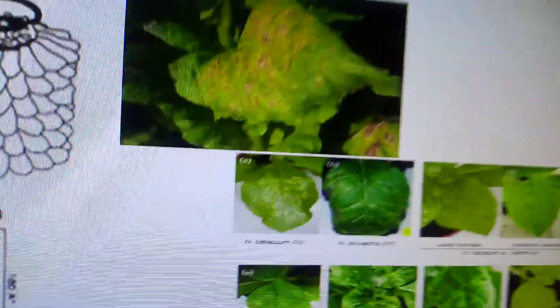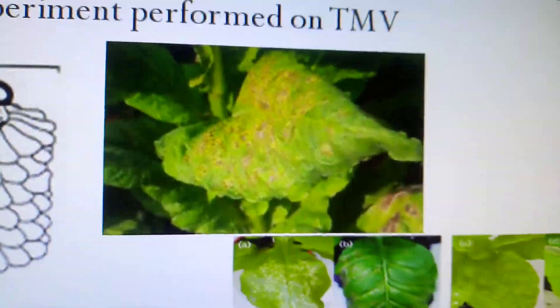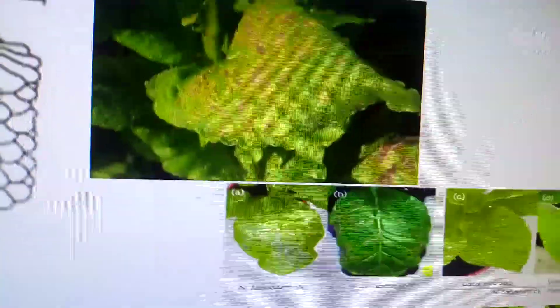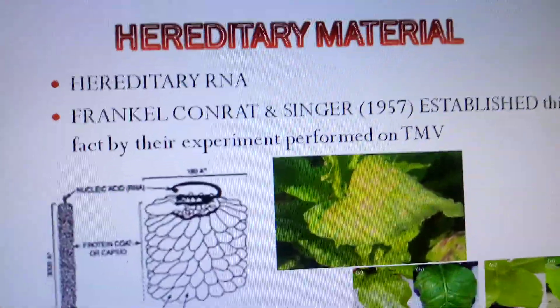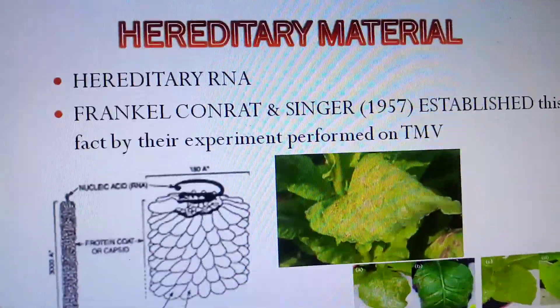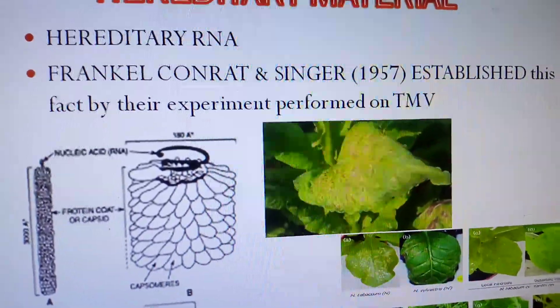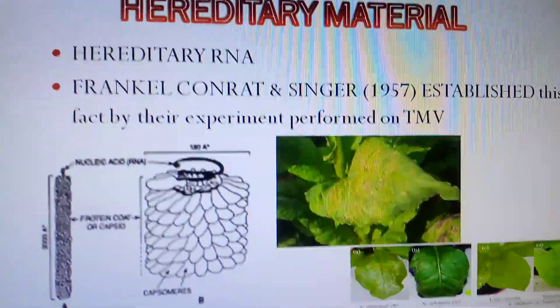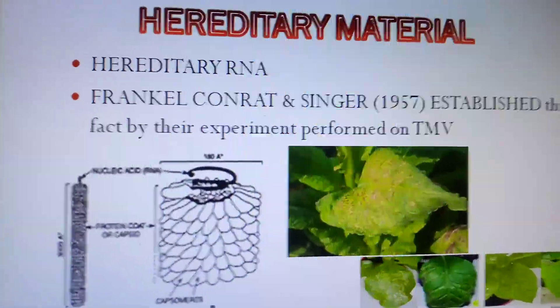The diseased leaves are caused by TMV (tobacco mosaic virus). This shows that RNA is the hereditary material in this case, as demonstrated by Fraenkel-Conrat and Singer. RNA is present in plant cells.